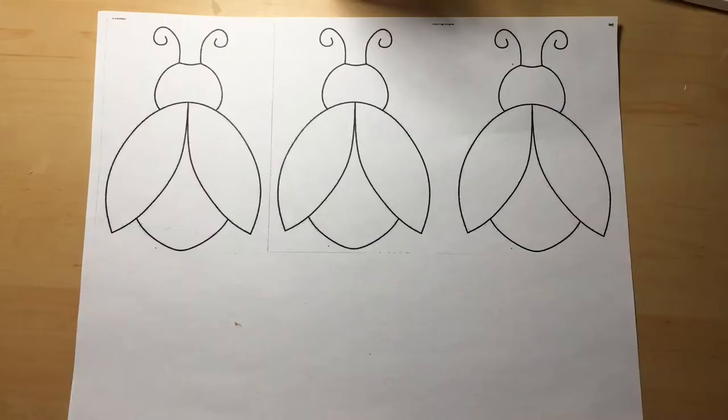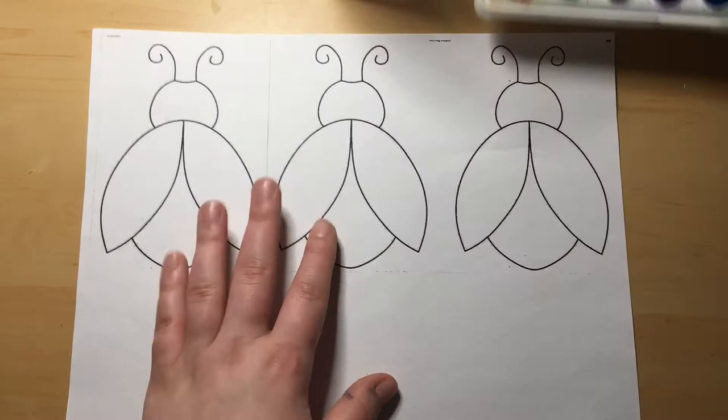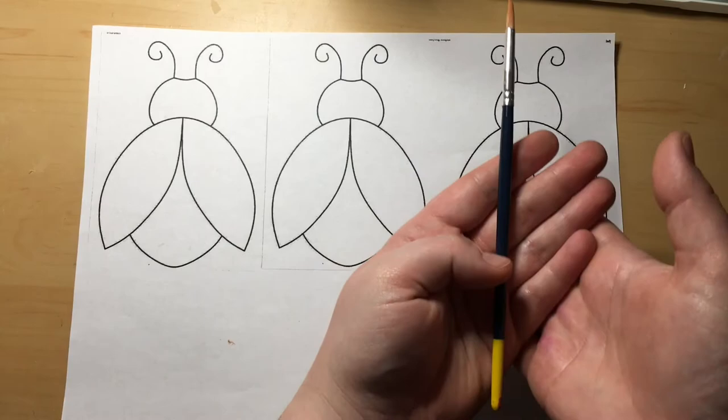Step one is mixing our primary colors to make secondary. We're going to need our ladybug template, our watercolors, our cup of water, a paint brush, and a paper towel.